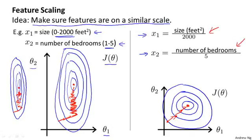So by scaling the features so that they take on similar ranges of values, in this example, we end up with both features x1 and x2 between 0 and 1, you can wind up with an implementation of gradient descent that can converge much faster.